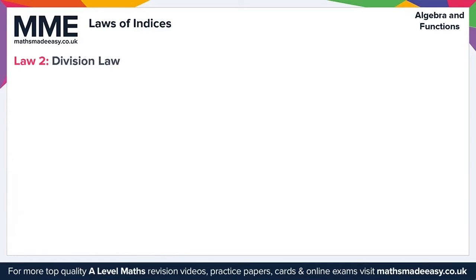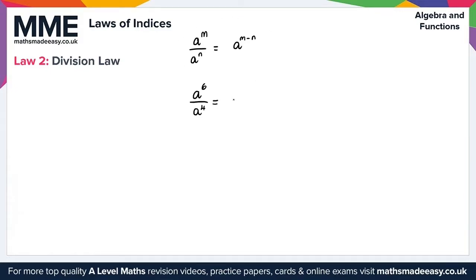Law 2 is the division law, which states that a to the m divided by a to the n can be expressed as a to the m minus n. For example, a to the 6 over a to the 4 is a to the 6 divided by a to the 4. Applying the law, this is a to the 6 minus 4, which simplifies to a squared.